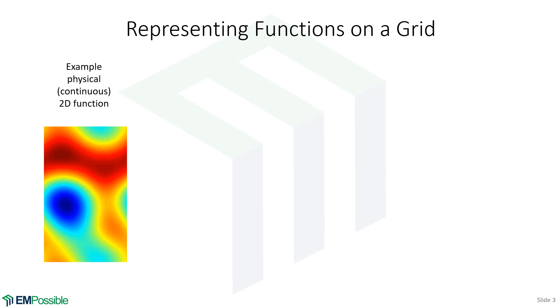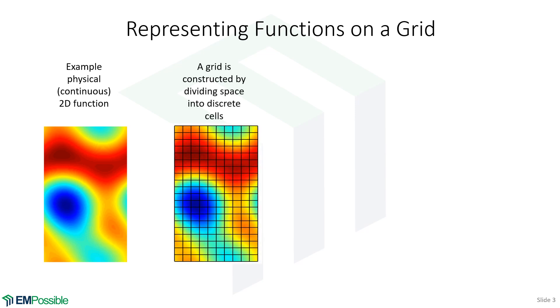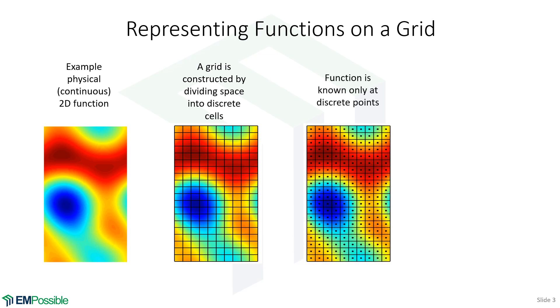We are going to choose to make it discrete by dividing space up into a series of cells. If we look within these cells, we notice that function is still varying. So even though we've divided space up into a series of cells, there's still an infinite amount of information in each one of those cells. So we still can't store that function.